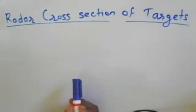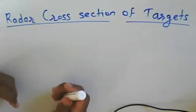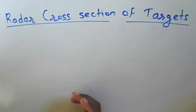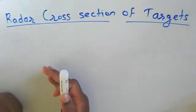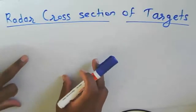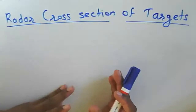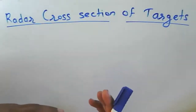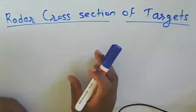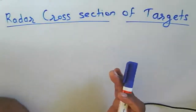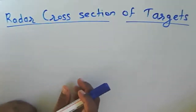Welcome to the radar engineering course. We continue the session on radar cross-section of a target. Radar cross-section is about what happens to the object when a signal is sent to it — how the scattering signal reaches back to the radar. The area or region of the object that reflects the signal back to the radar is called the radar cross-section.